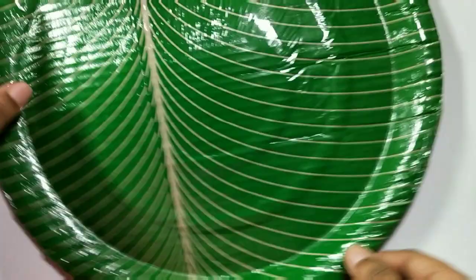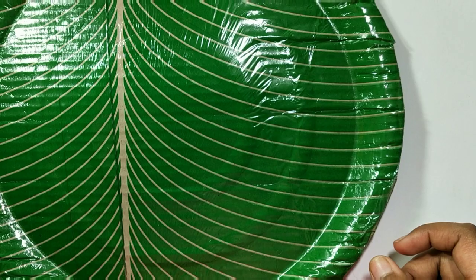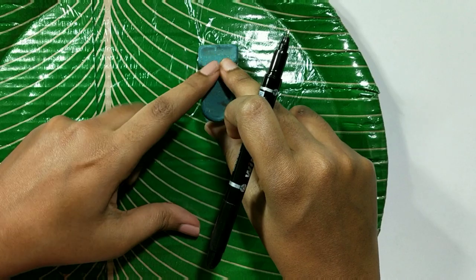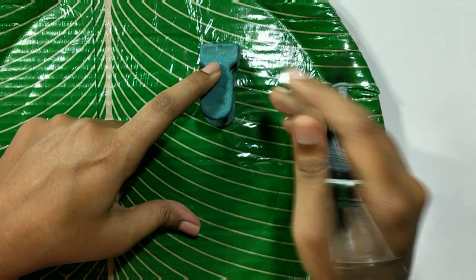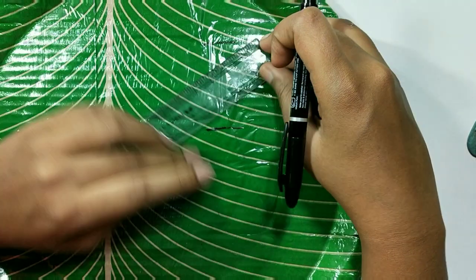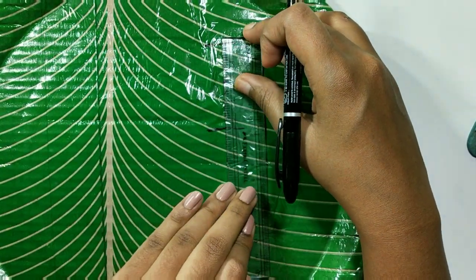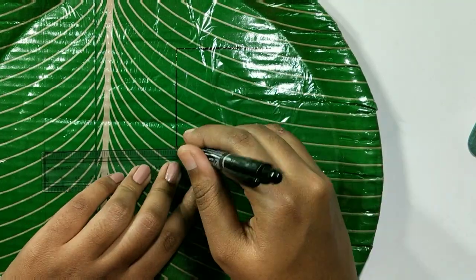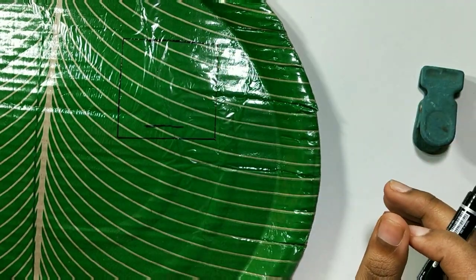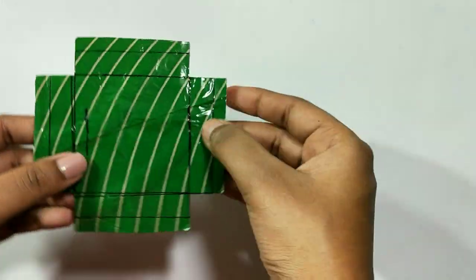Take a paper plate which has lamination on it and a clip. Mark the size of the clip and make a square a bit bigger than that. Here we are making a mold, so for that we need to add walls to this square.